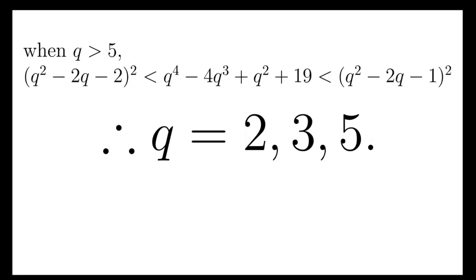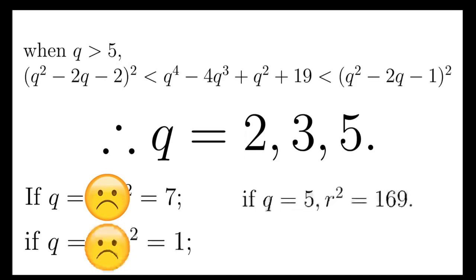So, when q is 2, after some calculations, r^2 = 7, but it's obviously wrong because r can never be an integer. For q = 3, r^2 = 1, so r can be 1, but r is then obviously not a prime. And the final case is that q equals 5, and r^2 = 169, which gives r to be 13. So we are good.